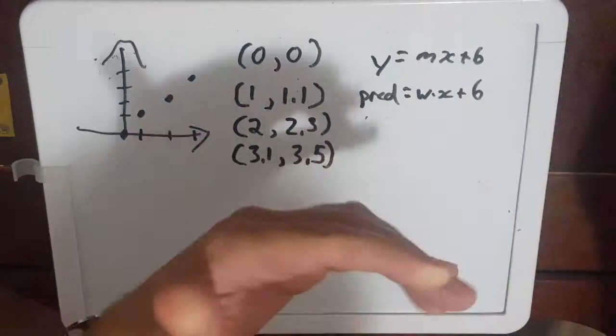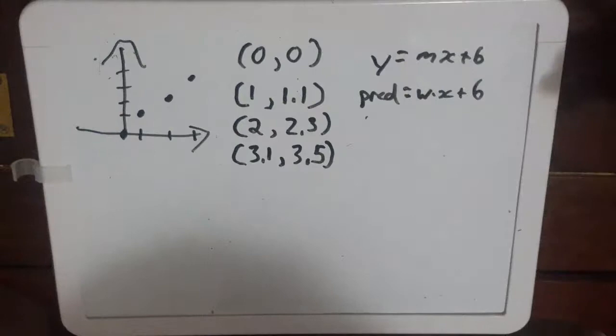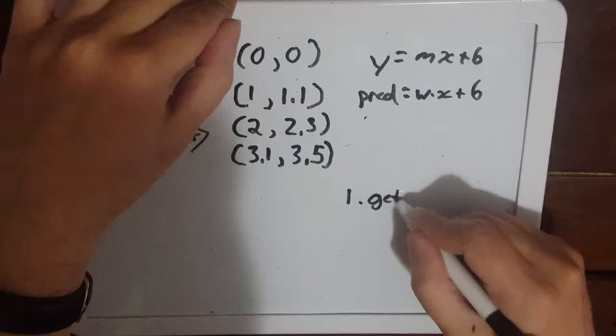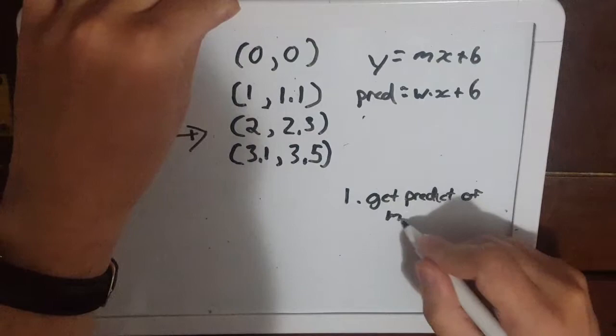So there are four steps to training an algorithm. First we get the prediction of our model. Okay, so let's make a model.